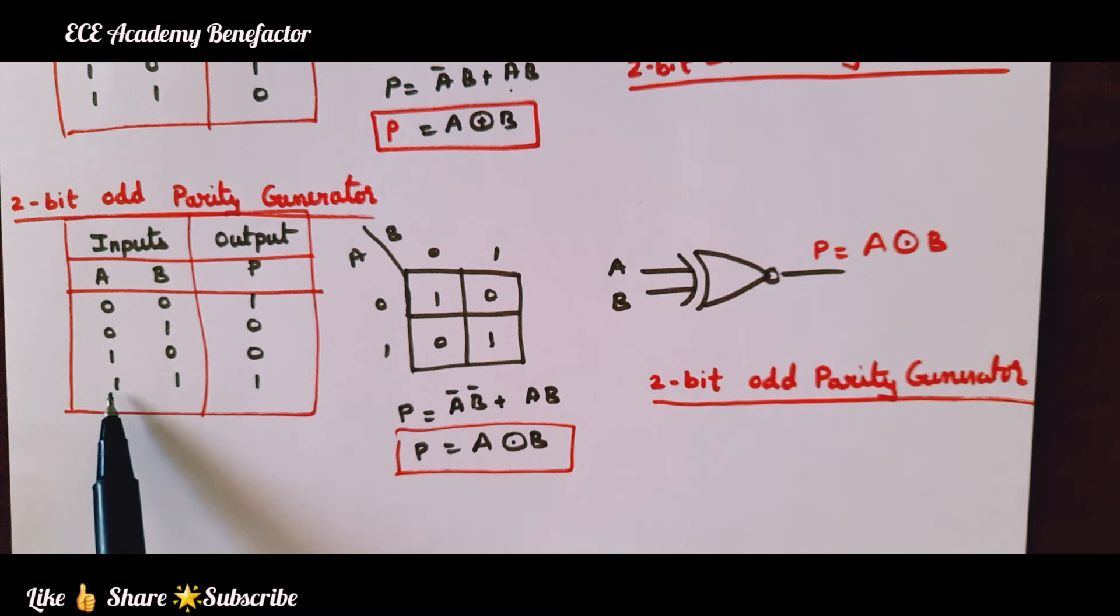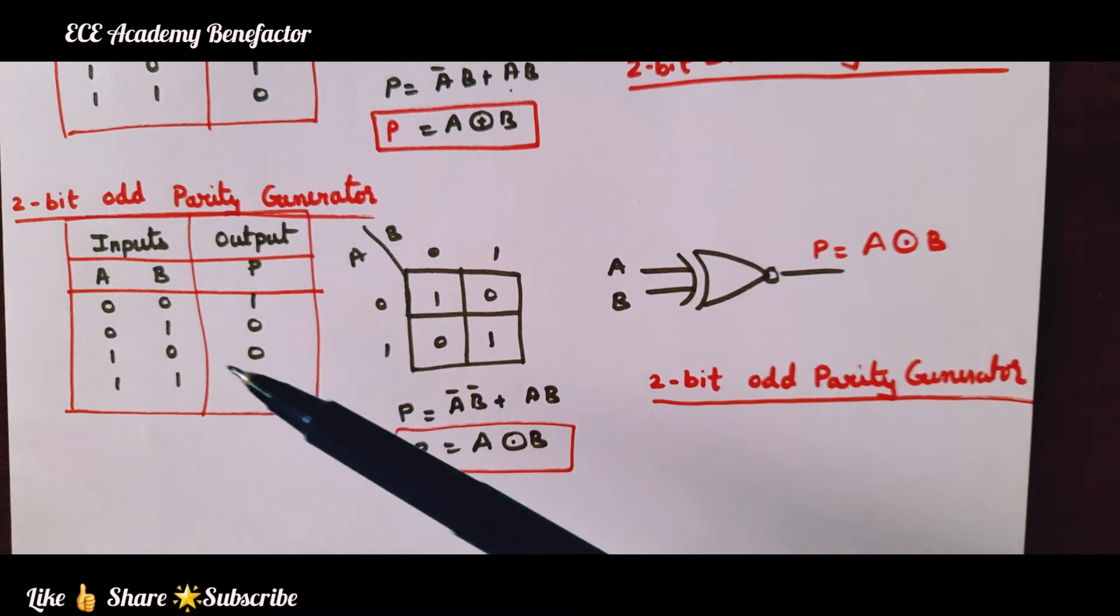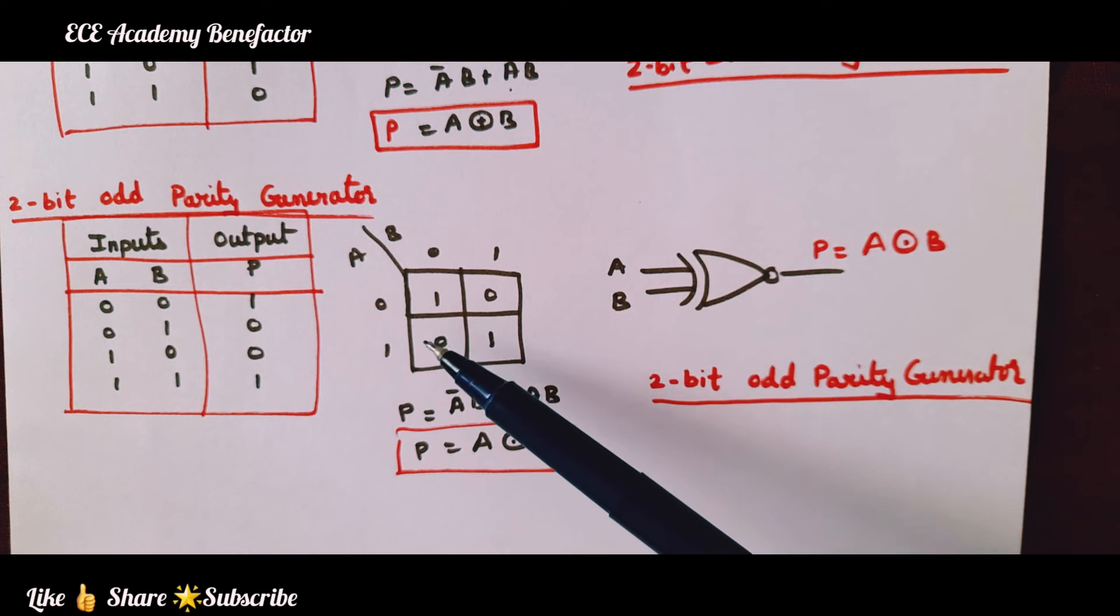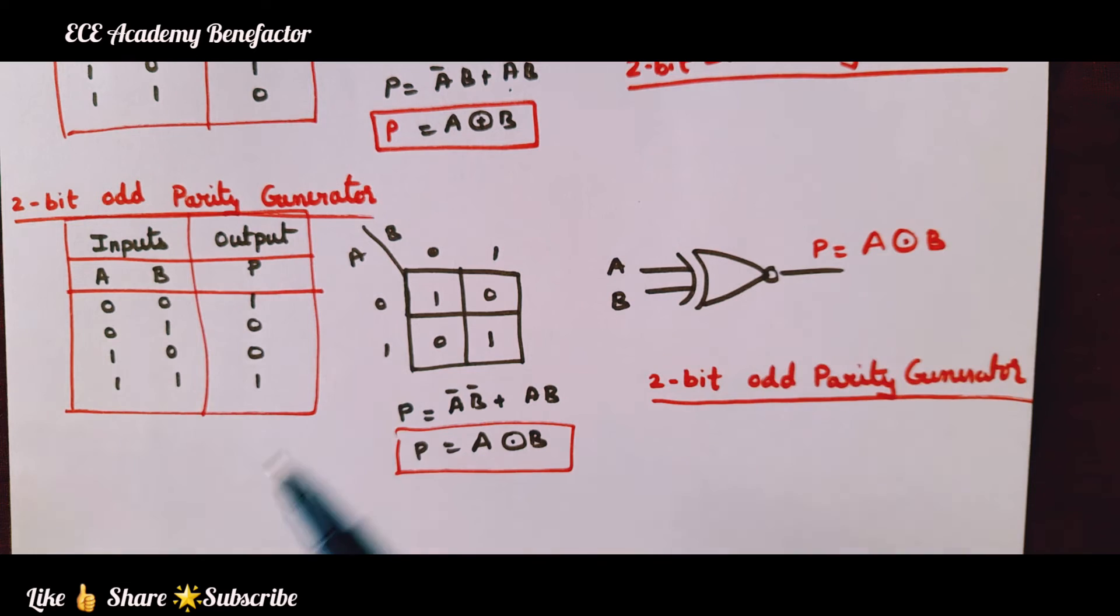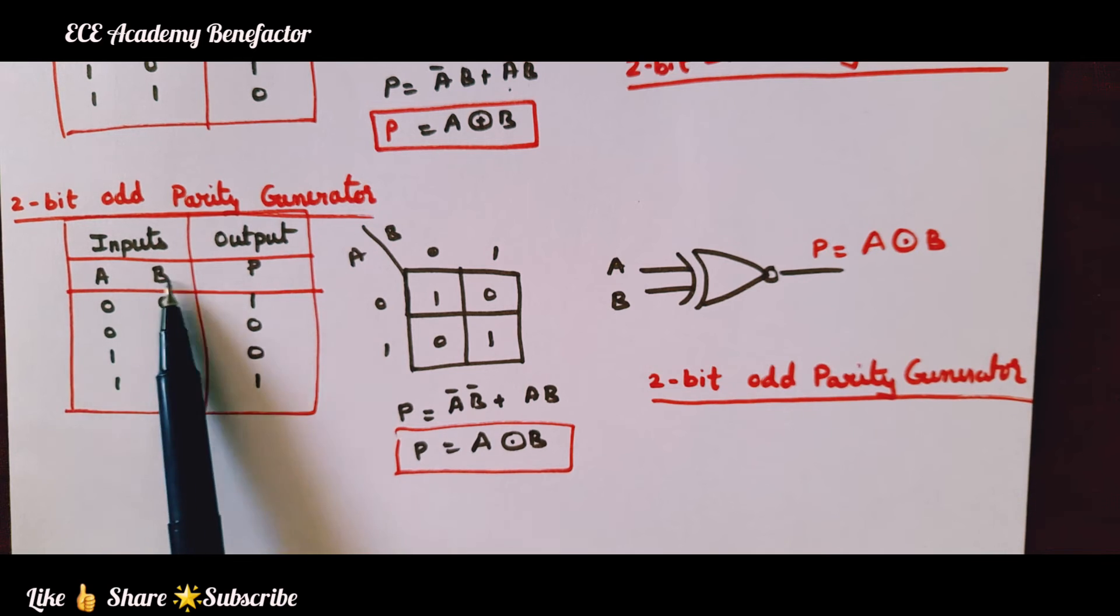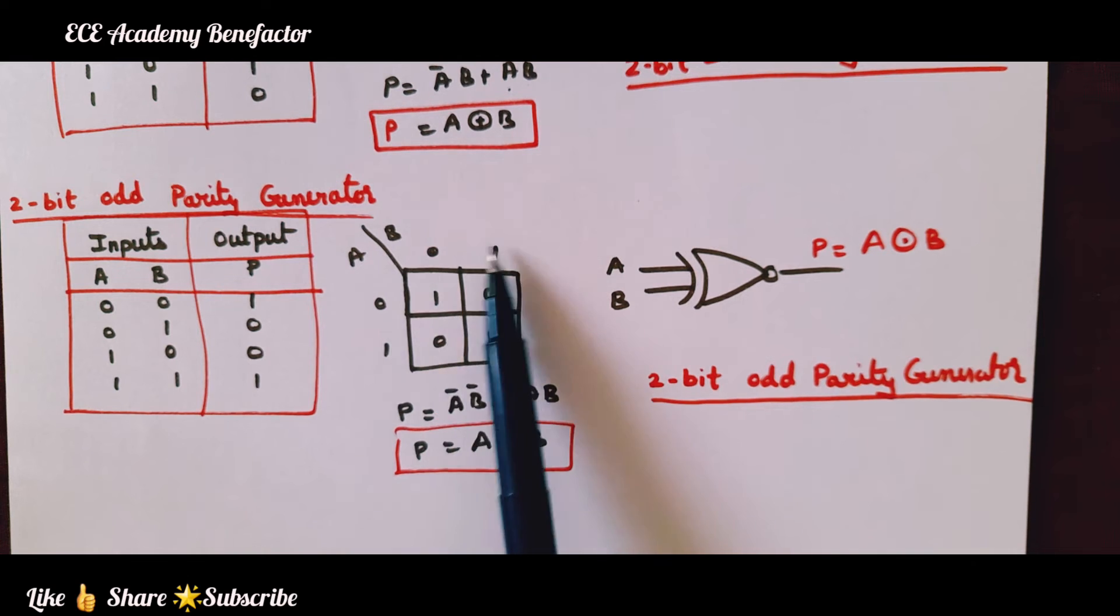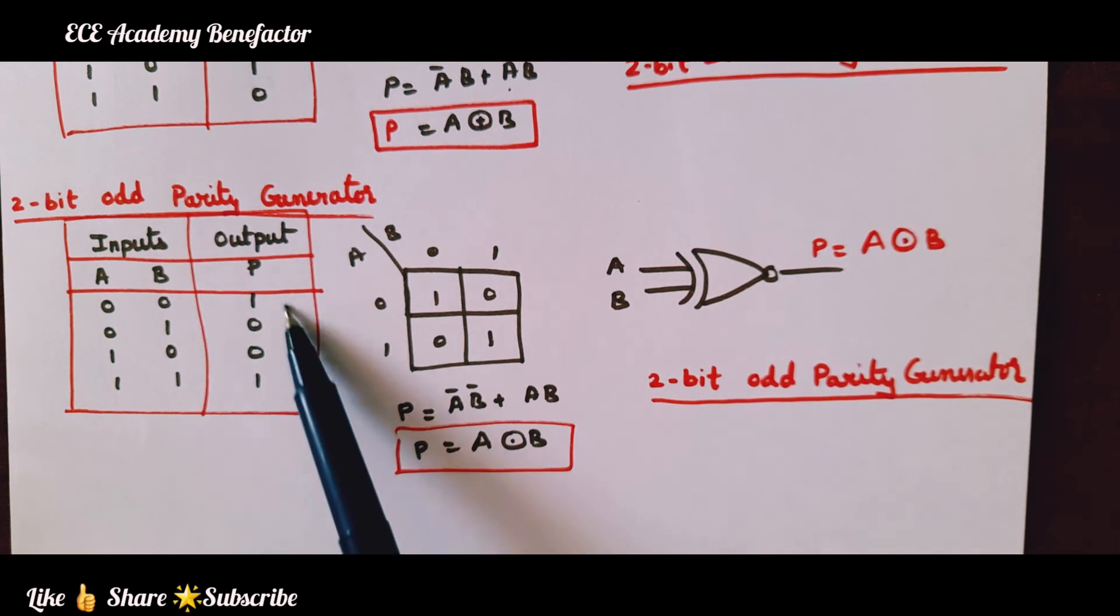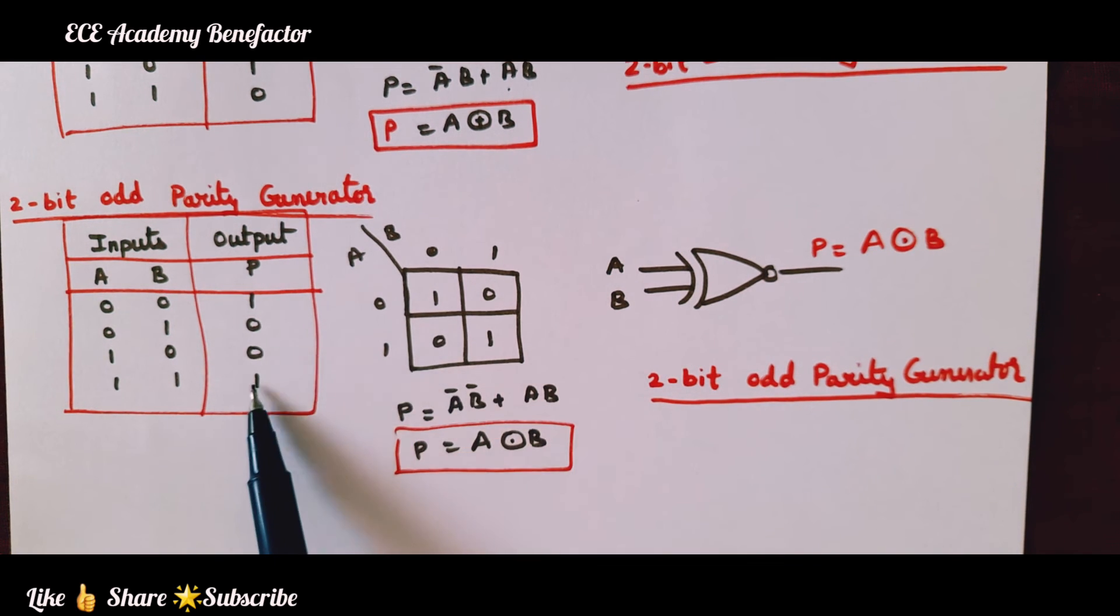For the information 1,1 even number of 1s, so parity will be 1 to make this combination odd number of 1s. We got 1, double 0, 1. We had taken two variable K-map A, B. Remember whenever you are writing the K-map, follow the sequence A, B. It will not be confusing: A then B, 0,1; 0,1.